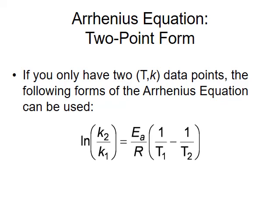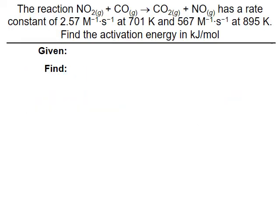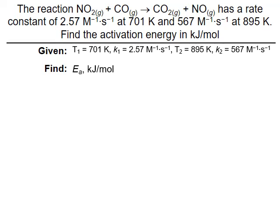Let's look at an example. We're asked to find the activation energy for the reaction of nitrogen dioxide and carbon monoxide to form carbon dioxide and nitrogen monoxide. We're given two sets of temperature and rate constants. We'll set our first temperature, T1, as 701 Kelvin, with rate constant K1 of 2.57 moles per liter to the negative one times seconds to the negative one. Our second temperature is 895 Kelvin, with rate constant K2 of 567 moles per liter to the negative one times seconds to the negative one. We're asked to find the activation energy.